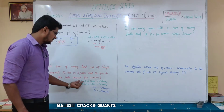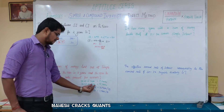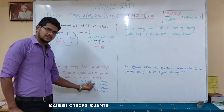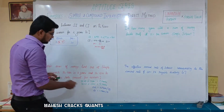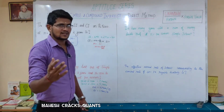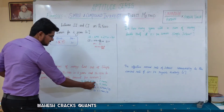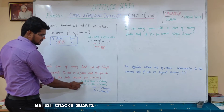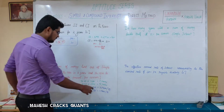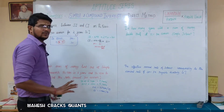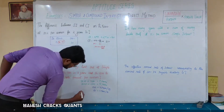We know the Simple Interest for 1 year is Rs. 60. So for 3 years, Simple Interest is 3 times 60 equals Rs. 180. Subtracting from the 3-year amount: Principal equals Rs. 1380 minus Rs. 180 equals Rs. 1200. Similarly for 5 years: Simple Interest is 5 times 60 equals Rs. 300, so Principal equals Rs. 1500 minus Rs. 300 equals Rs. 1200. The principal is confirmed as Rs. 1200.